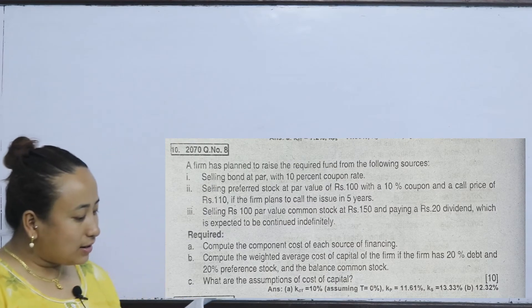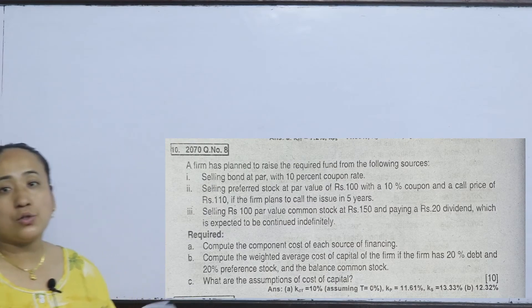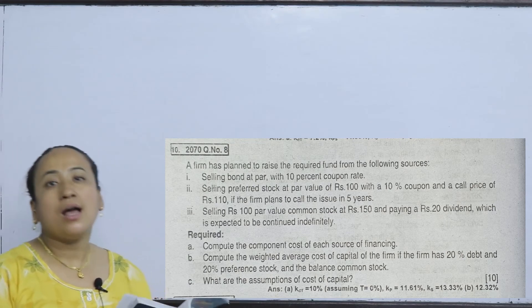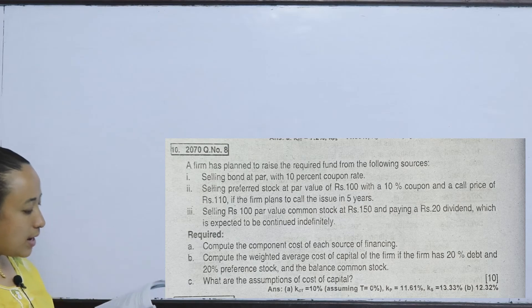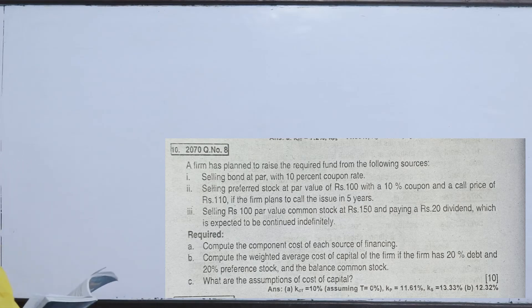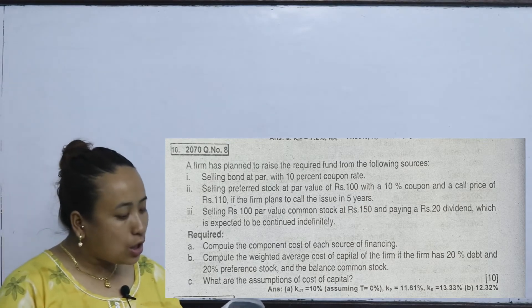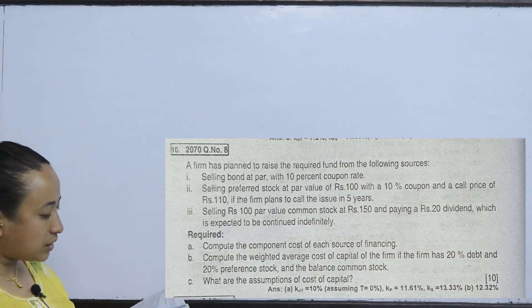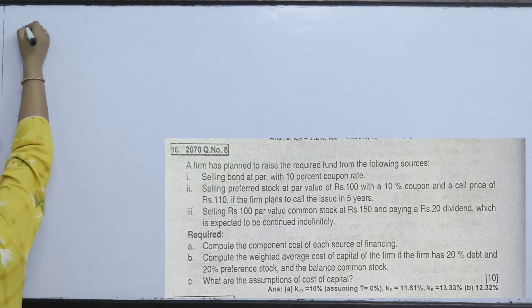A firm has planned to raise the required funds from the following sources. Number one is selling a bond at par. The par value is 1000, with a 10% coupon rate.